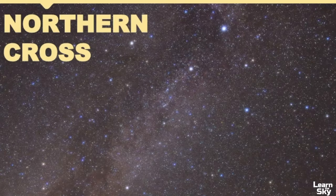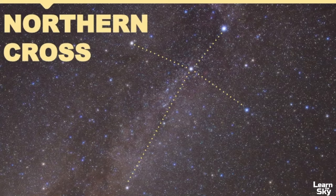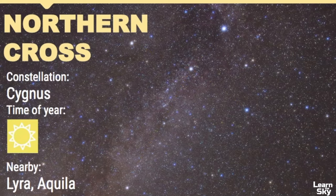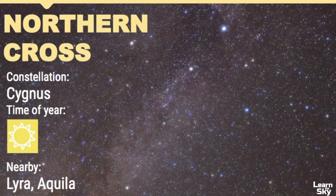Our next asterism that we can see in the summer sky is called the Northern Cross. The Northern Cross is a part of the constellation of Cygnus and it really just makes up the brightest stars of the Swan constellation. The nearby constellations are Lyra and Aquila. This star pattern is pretty easy to point out even in skies with a decent amount of light pollution because the stars are of relatively equal magnitude.